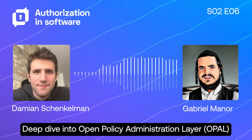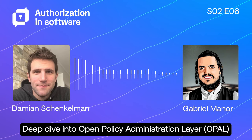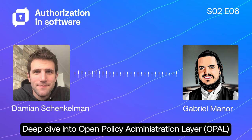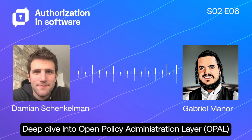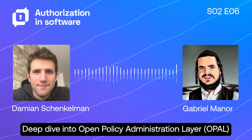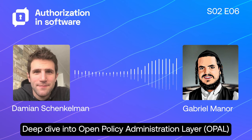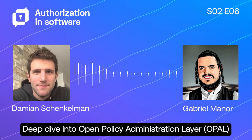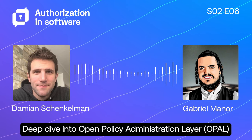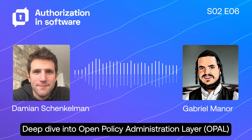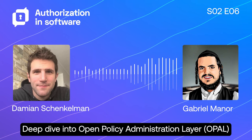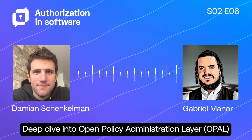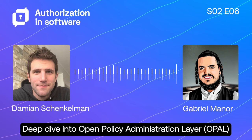You can take OPAL, deploy it on your environment, and plug in the policy engines. Currently OPAL already supports Open Policy Agent and Cedar agent — this is what we see as real market need. We're looking to the community to add more support. From Permit's perspective, we develop support for engines and release them as open source as we need them, which is why we recently released support for Cedar agent.